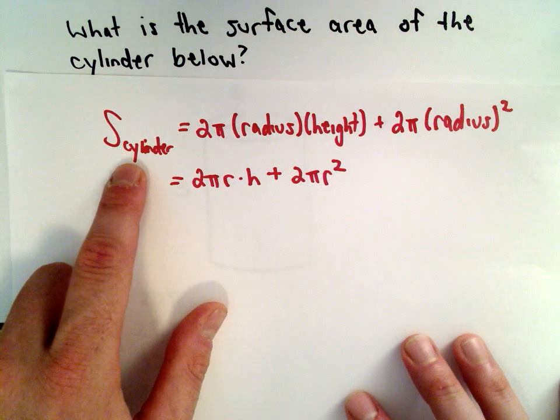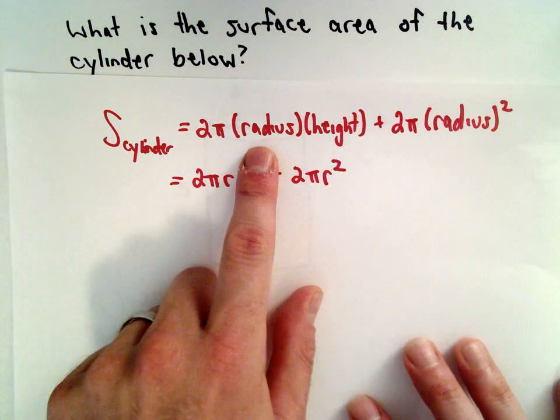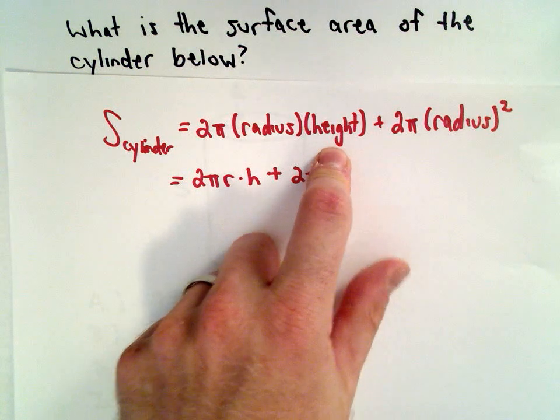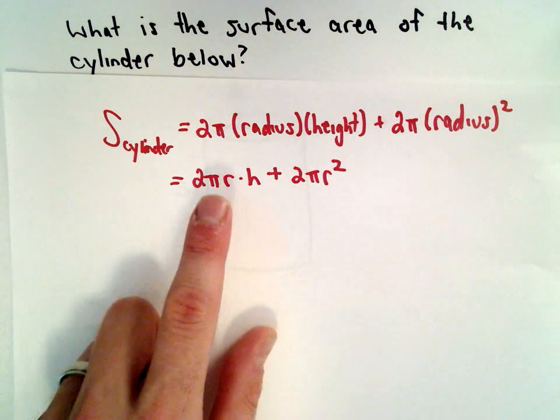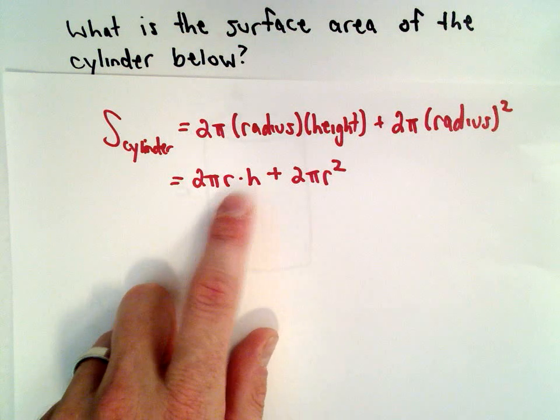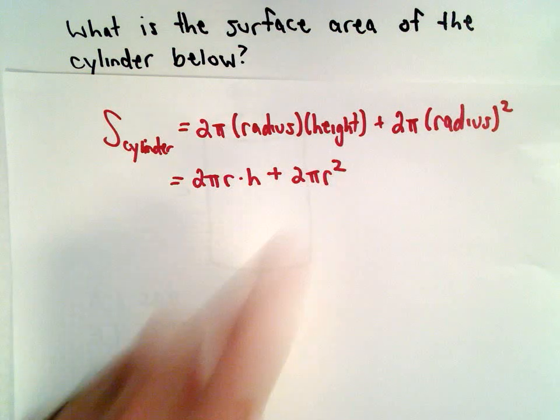The surface area of the cylinder is 2π multiplied by the radius multiplied by the height plus 2π multiplied by the radius squared, or we can abbreviate that as 2πrh plus 2πr².